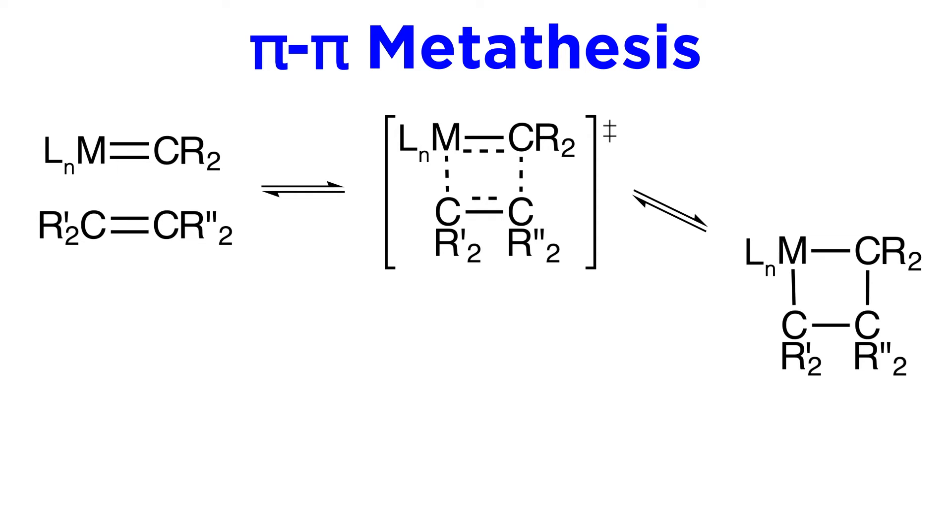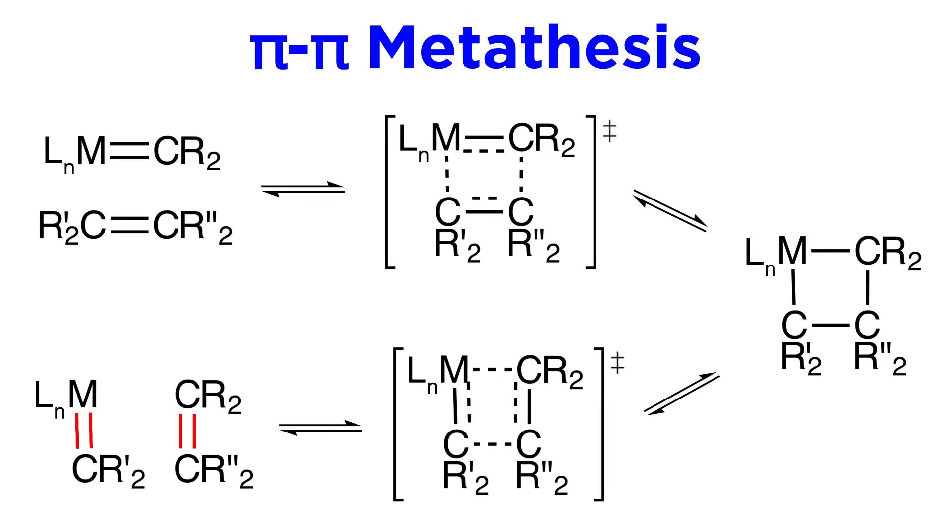Now the fascinating thing here is that while this step is reversible, it is possible for another metathesis to occur, where the original sigma bonds also break, to form two additional pi bonds, passing through this other transition state, and yielding these two completely new double bonds. So the metal has exchanged one alkylidene ligand for another, and the alkene has exchanged one group.